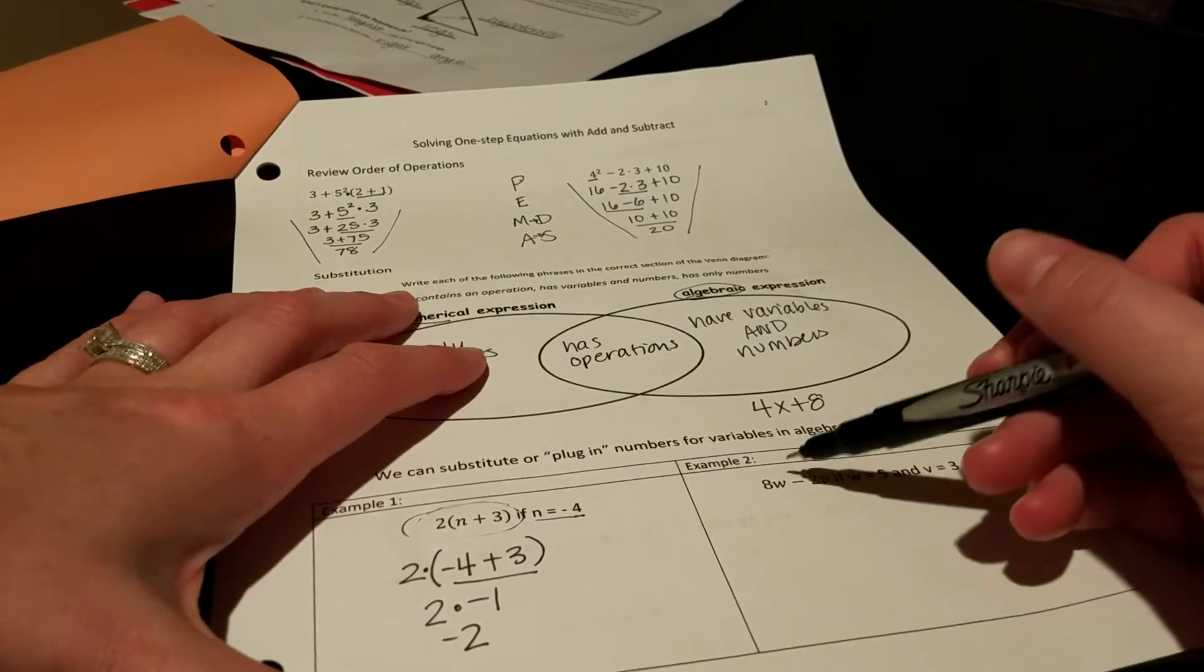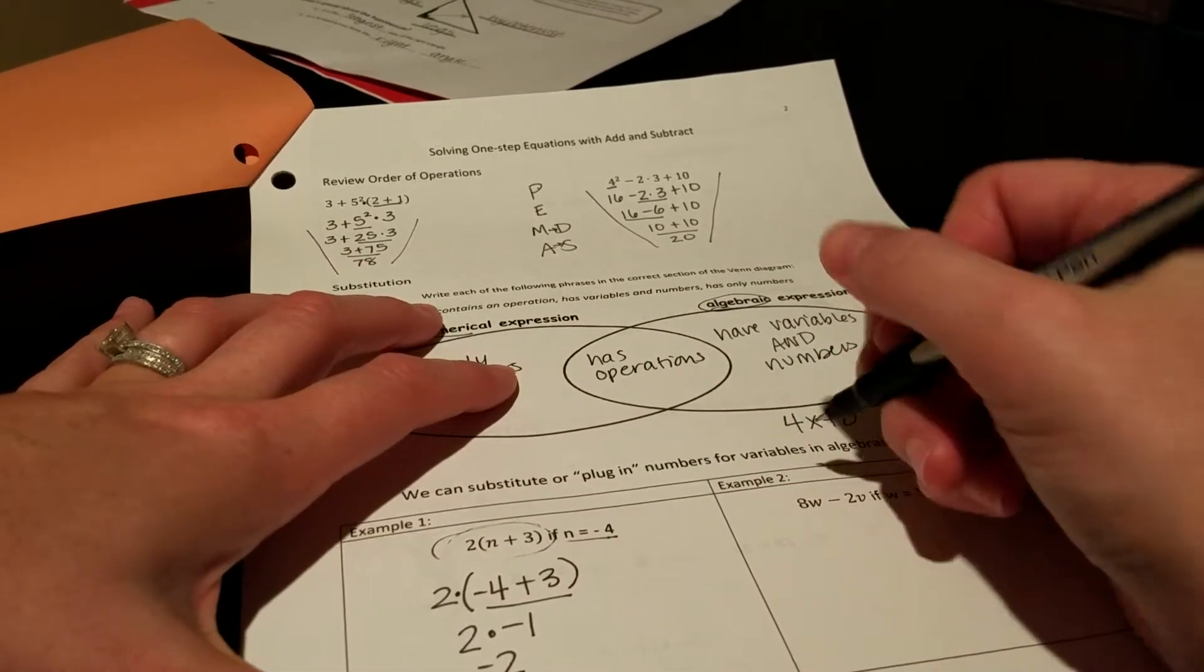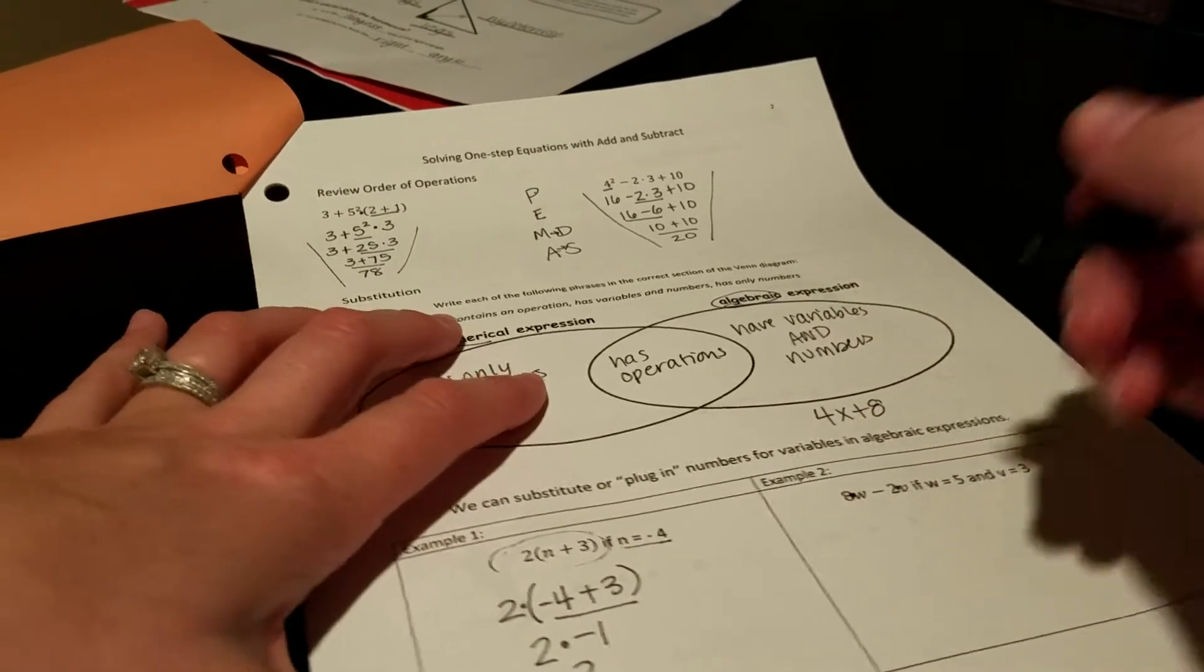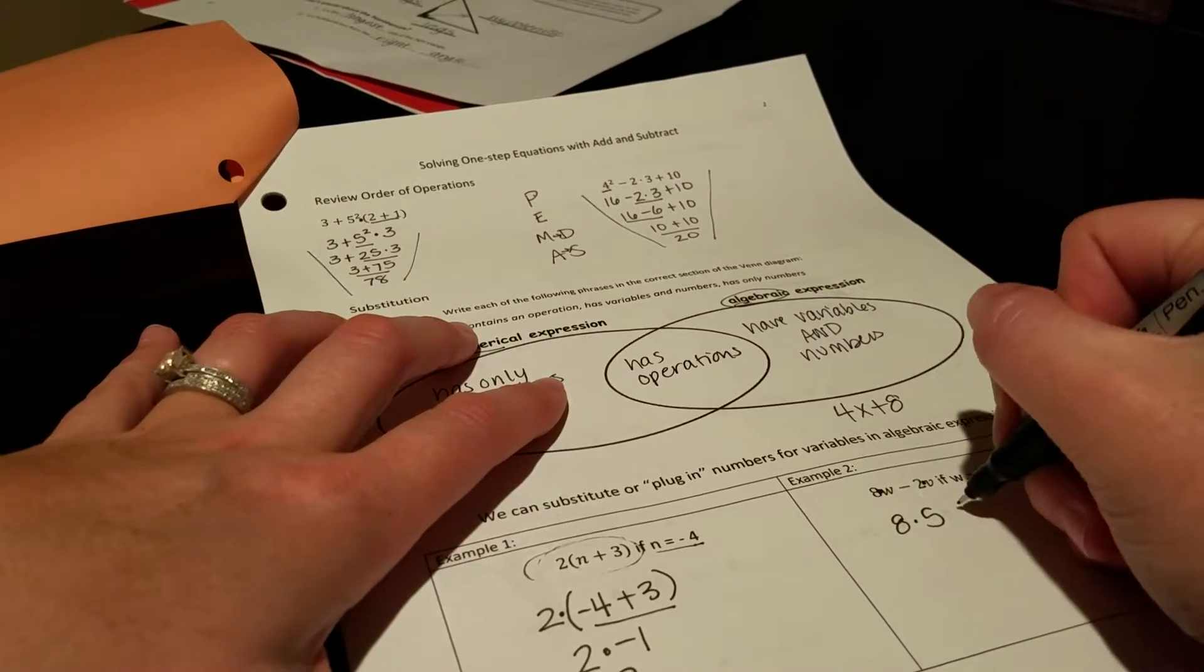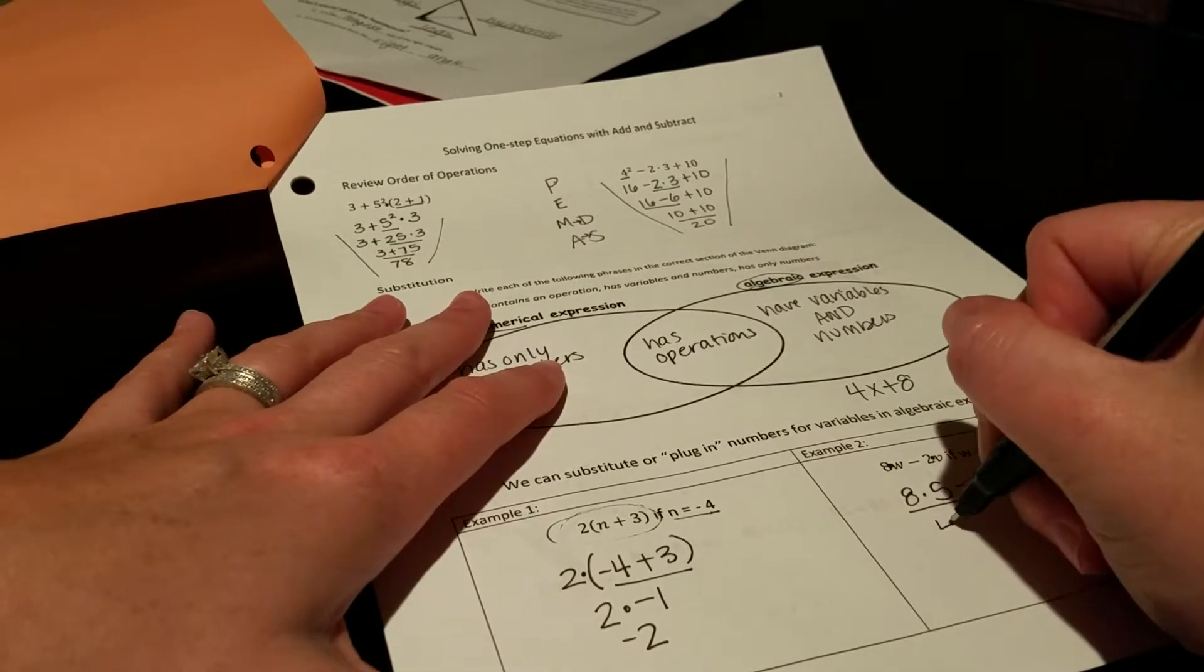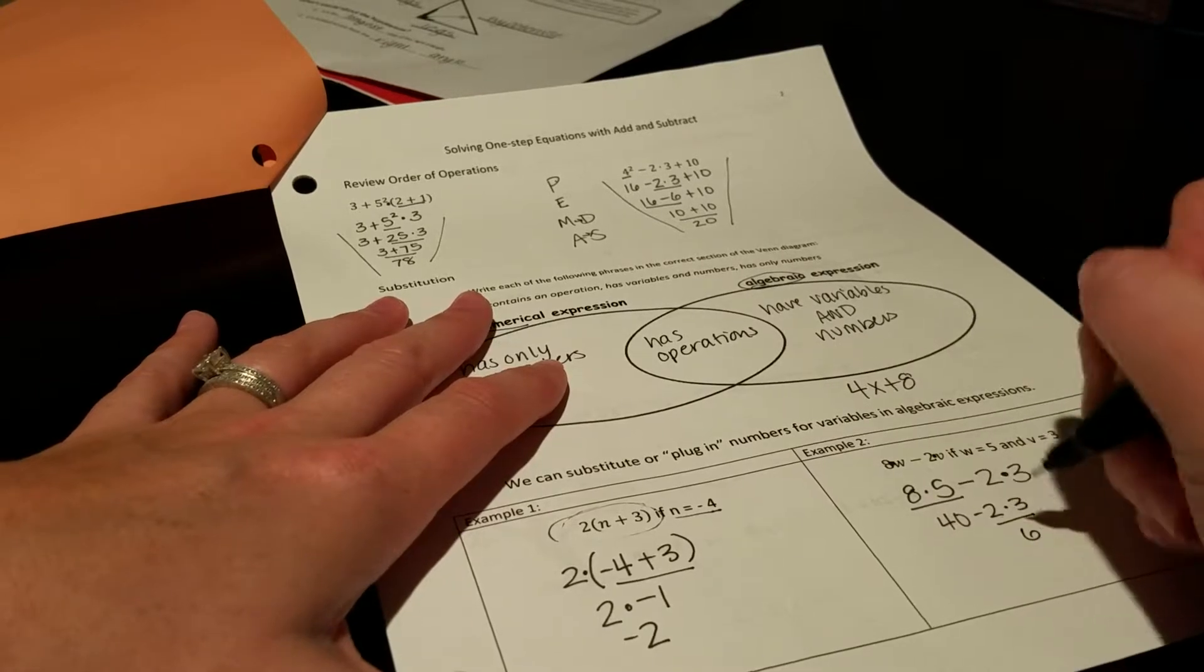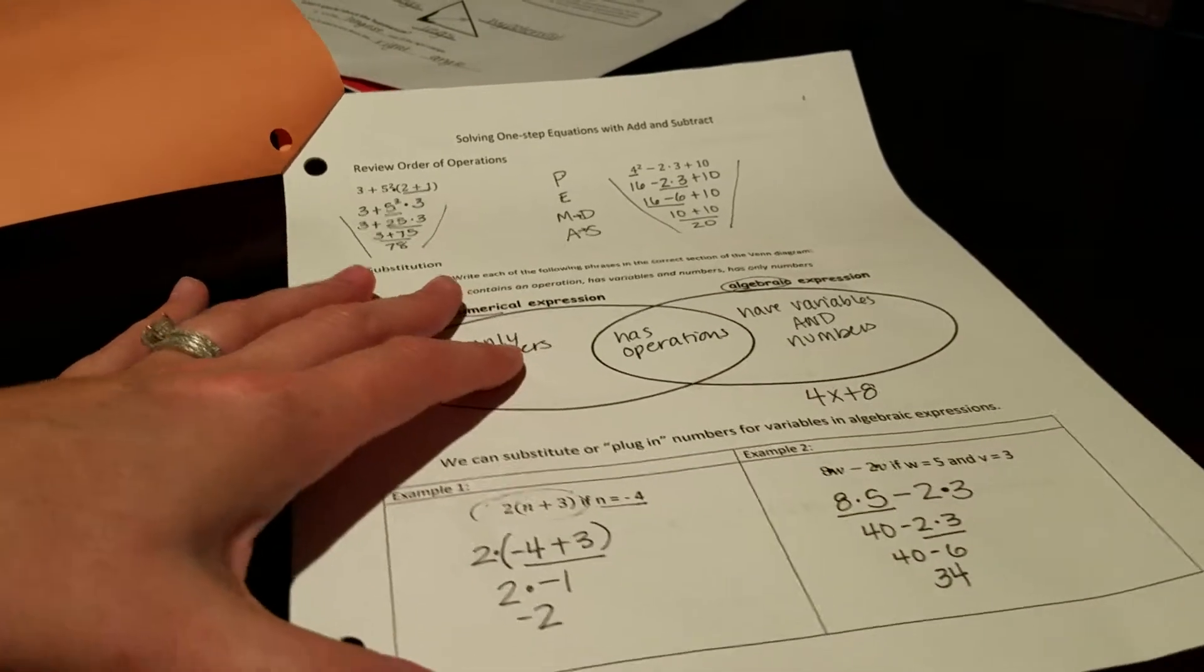Over here, 8w minus 2v if w equals 5 and v equals 3. 8w really means 8 times w and 2 times v. So 8 times 5 because 5 is w minus 2 times 3 because v is 3. 8 times 5 is 40 minus 2 times 3. 2 times 3 is 6 and 40 minus 6 is 34.